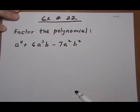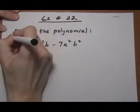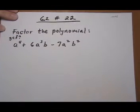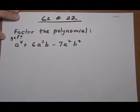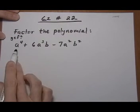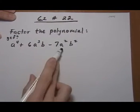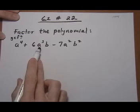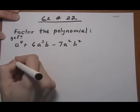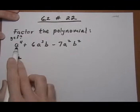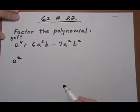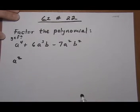But first we want to check is there a GCF and that's going to make our work easier if there is. Let's see, everybody has a² at least so we're going to pull out an a². For b, this one doesn't have a b so we can't pull out any b's and there's no common factors for the numbers.